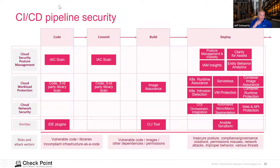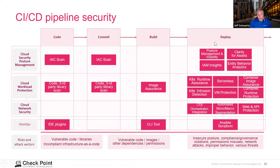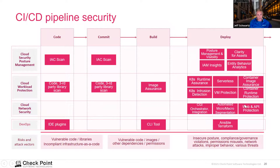Mapping that against the code-commit-build-deploy model using what Gartner calls CNAPP or the four C's model — from a security posture management perspective, providing scanning during code and commit integration, and then during deployment being able to look at metadata associated with cloud assets to identify behavior analytics, posture visibility for runtime capabilities, and network access. We can also provide similar functionality downstream for workload protection as it relates to serverless functions, containers, and workload assets, while integrating all of these capabilities into the automation toolsets your DevOps teams may be using today.